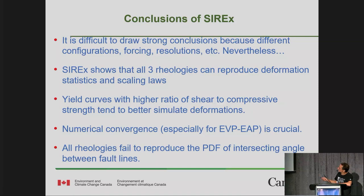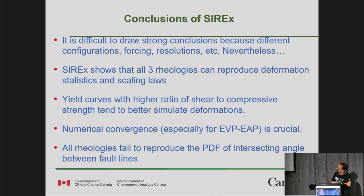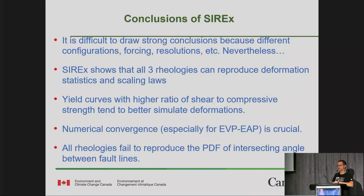Numerical convergence — especially for the elastic viscous plastic and the elastic anisotropic plastic — is crucial. Models that did not have well-converged solutions did not perform very well in CIREX. And all rheologies fail to reproduce the PDF of the intersecting angles between the fault lines; the angle is kind of too wide in the model, and it's hard to understand why. Damier is going to explain that after, so stay tuned.